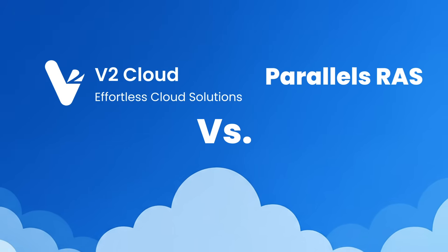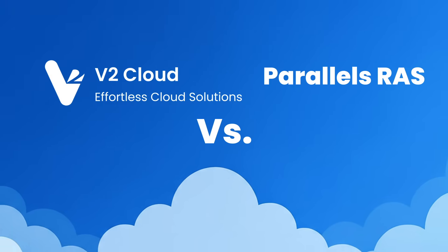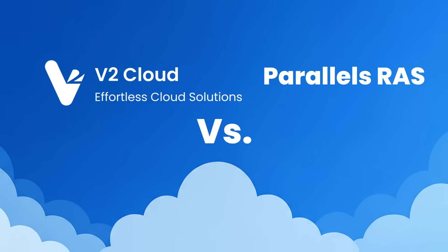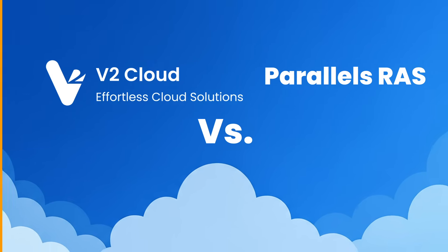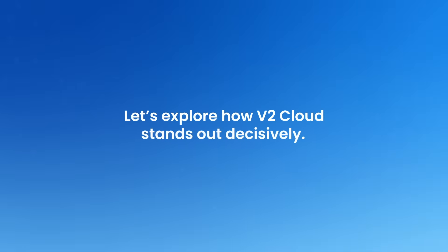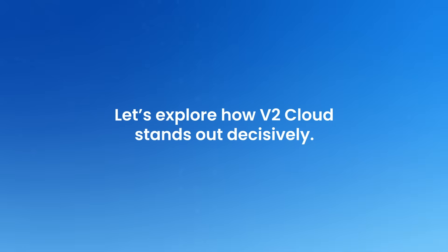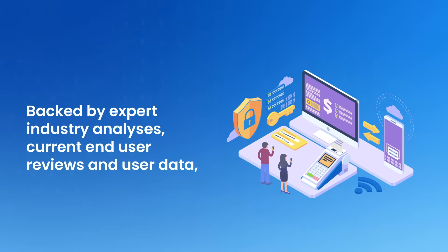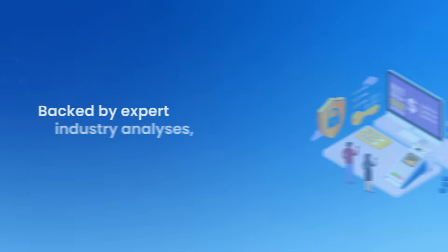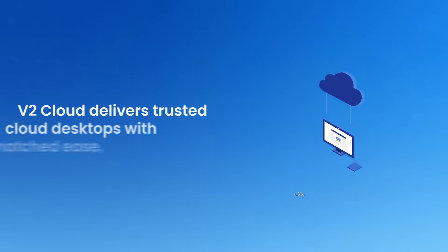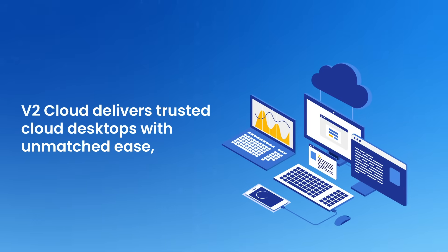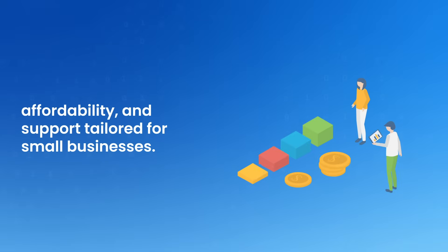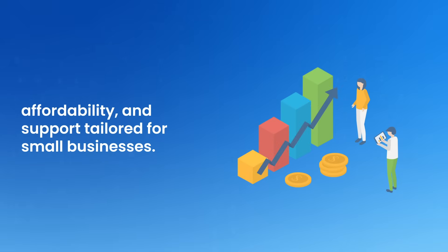V2 Cloud versus Parallels RAS. Choosing the right cloud desktop for SMBs can transform your business efficiency. Let's explore how V2 Cloud stands out decisively, backed by expert industry analyses, current end-user reviews, and user data. V2 Cloud delivers trusted cloud desktops with unmatched ease, affordability, and support tailored for small businesses.